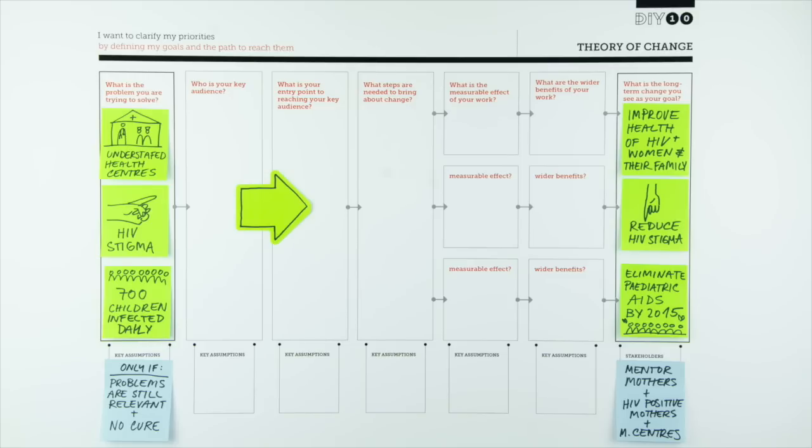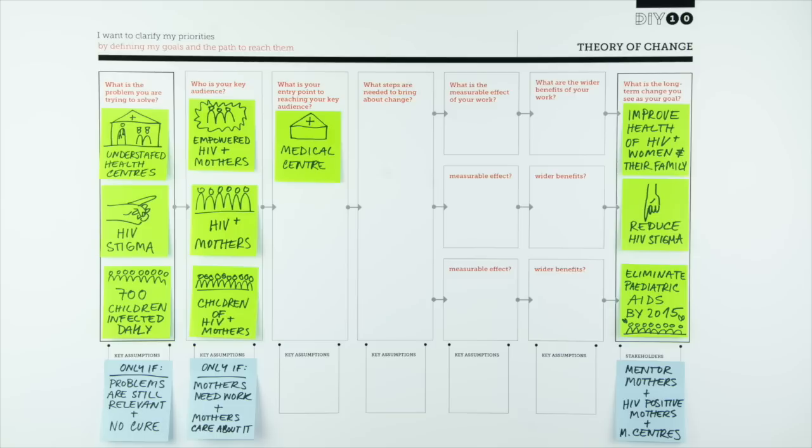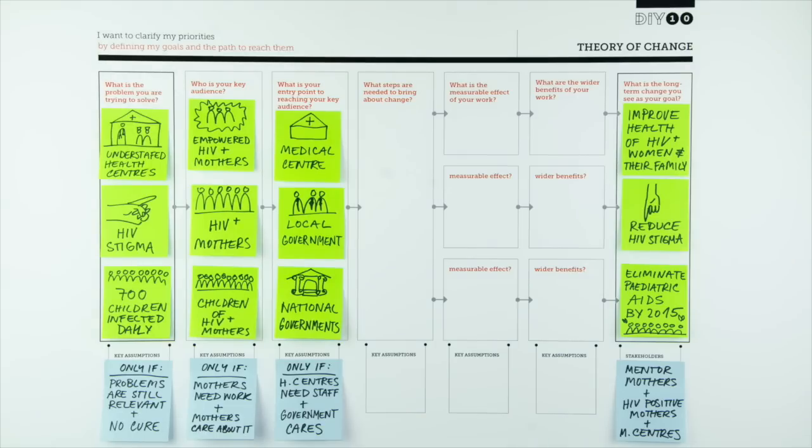Danielle identifies the people that are most affected by the issue and who she hopes would help her with her work. This helps her to identify the stakeholder groups that she needs to influence to achieve her long-term goal. Danielle has identified that women are far more likely to listen to other women in their community and decides to focus her efforts on a mentoring scheme led by HIV-positive mothers.